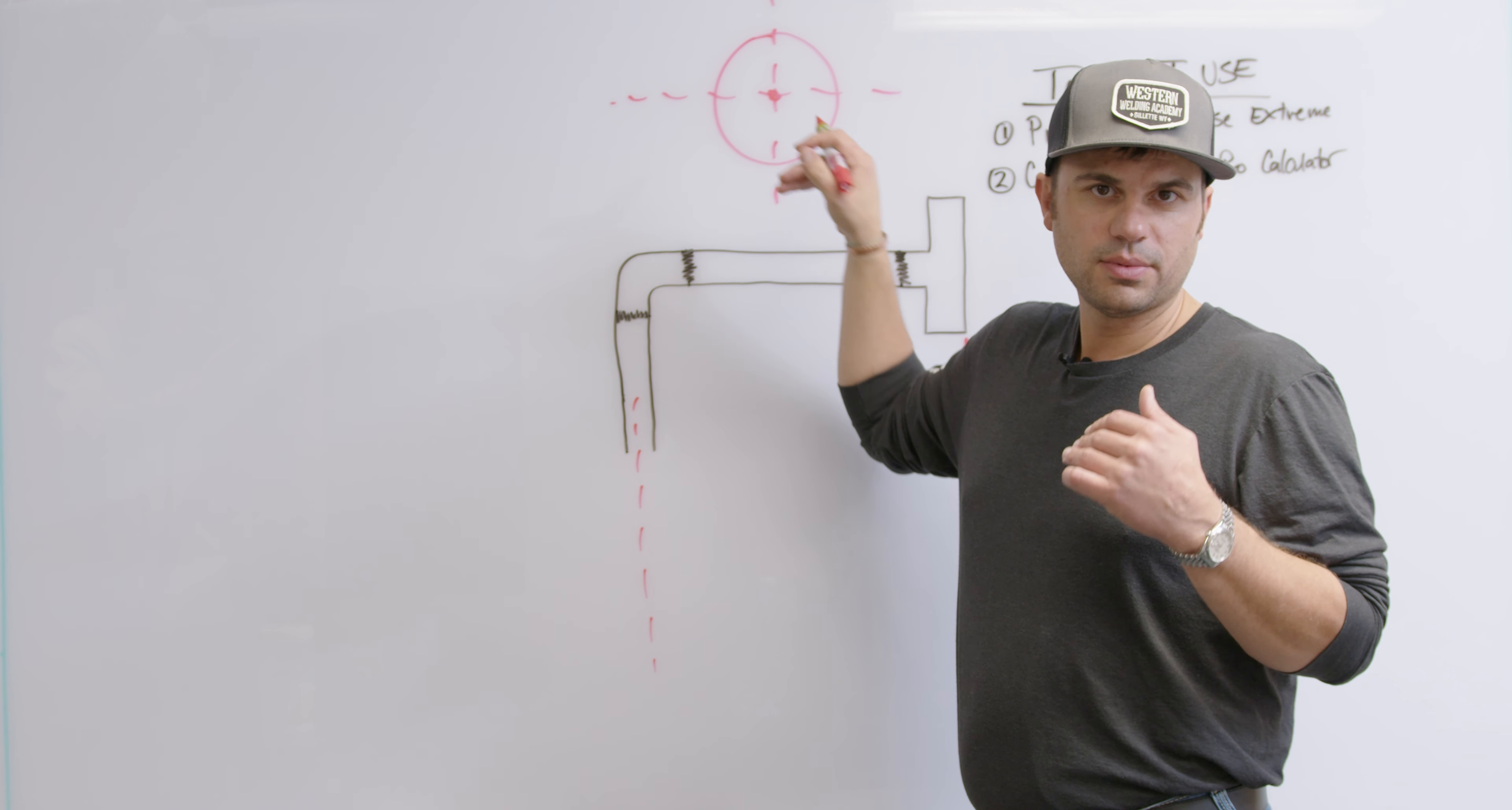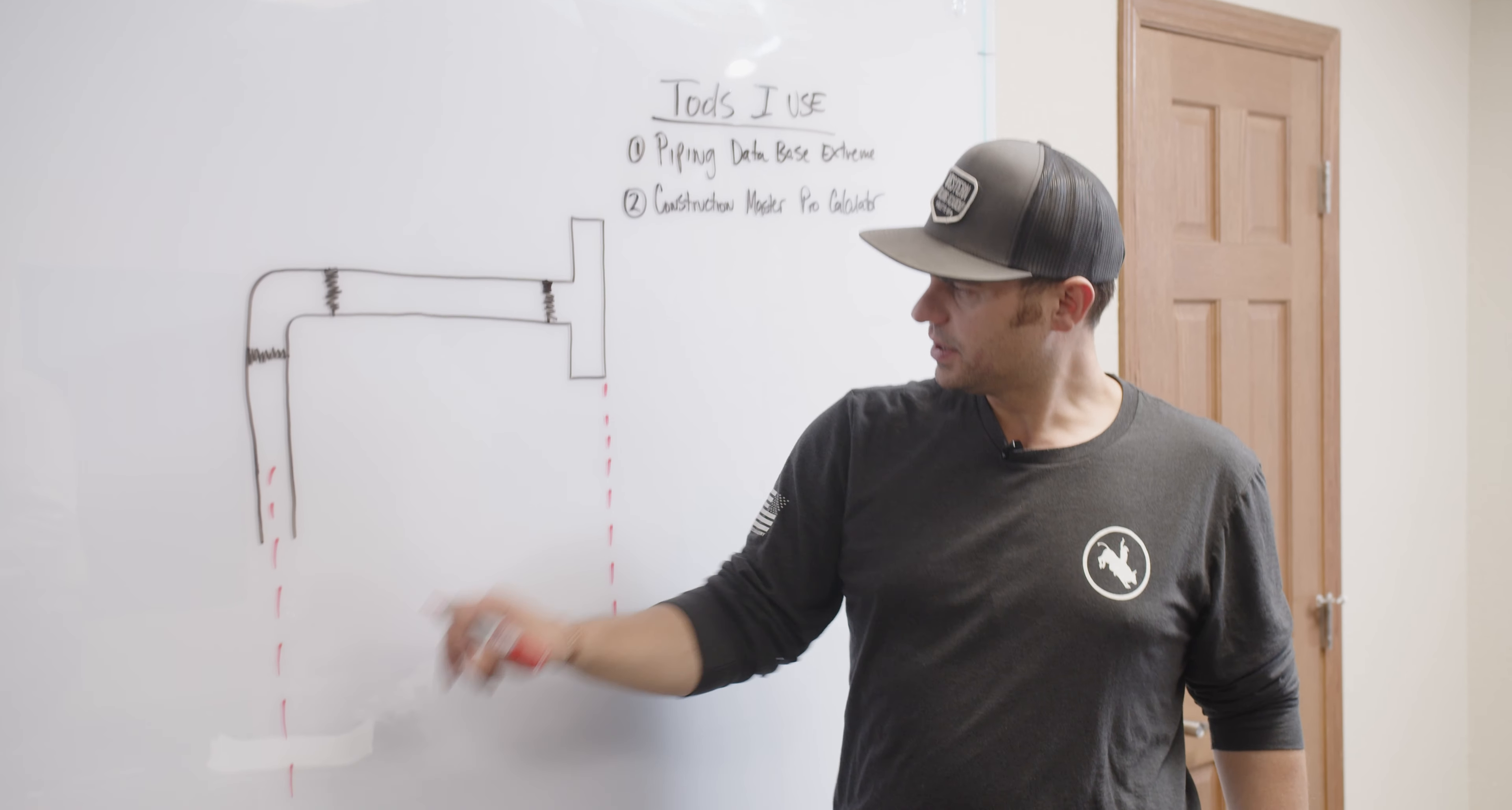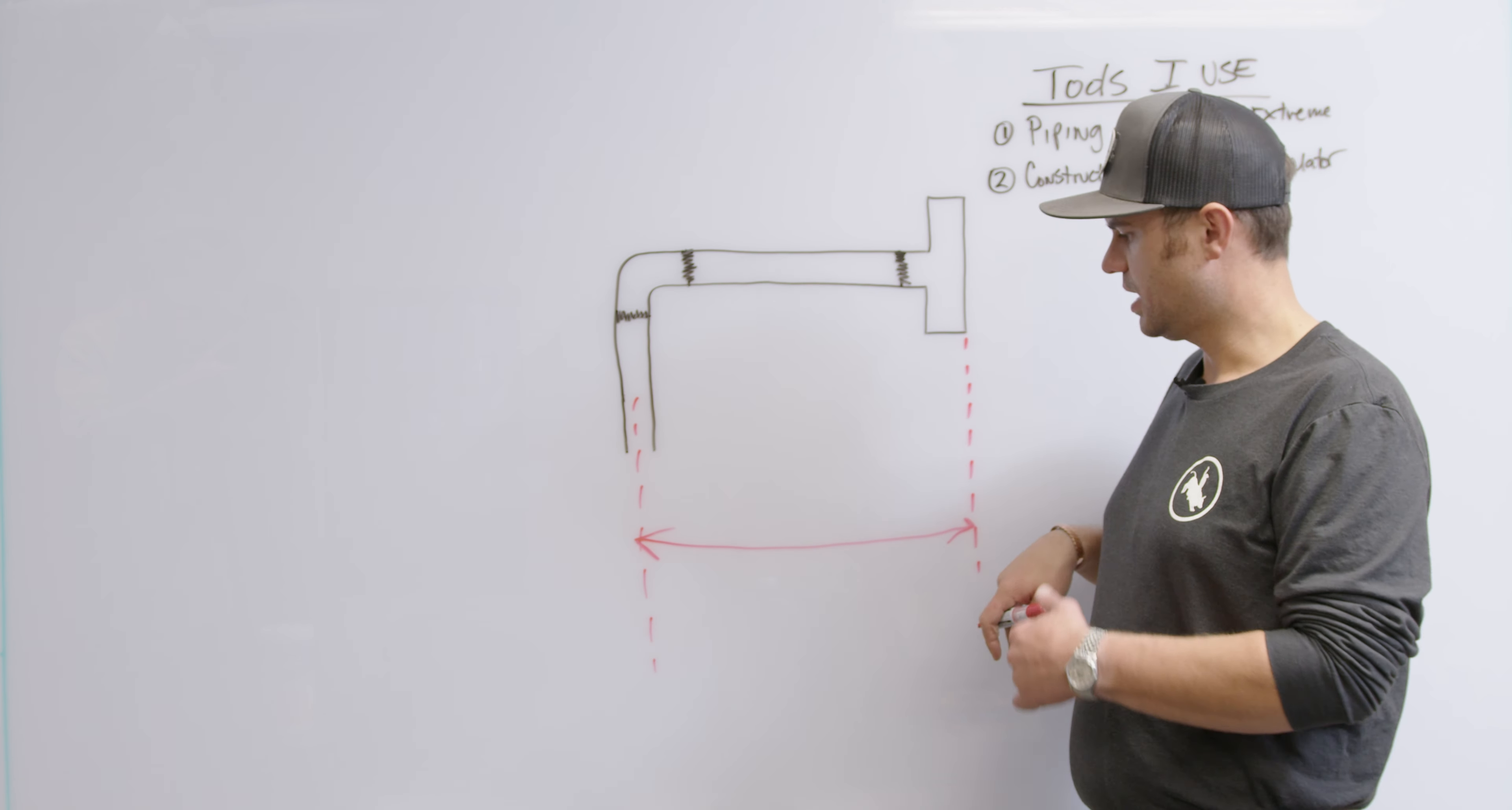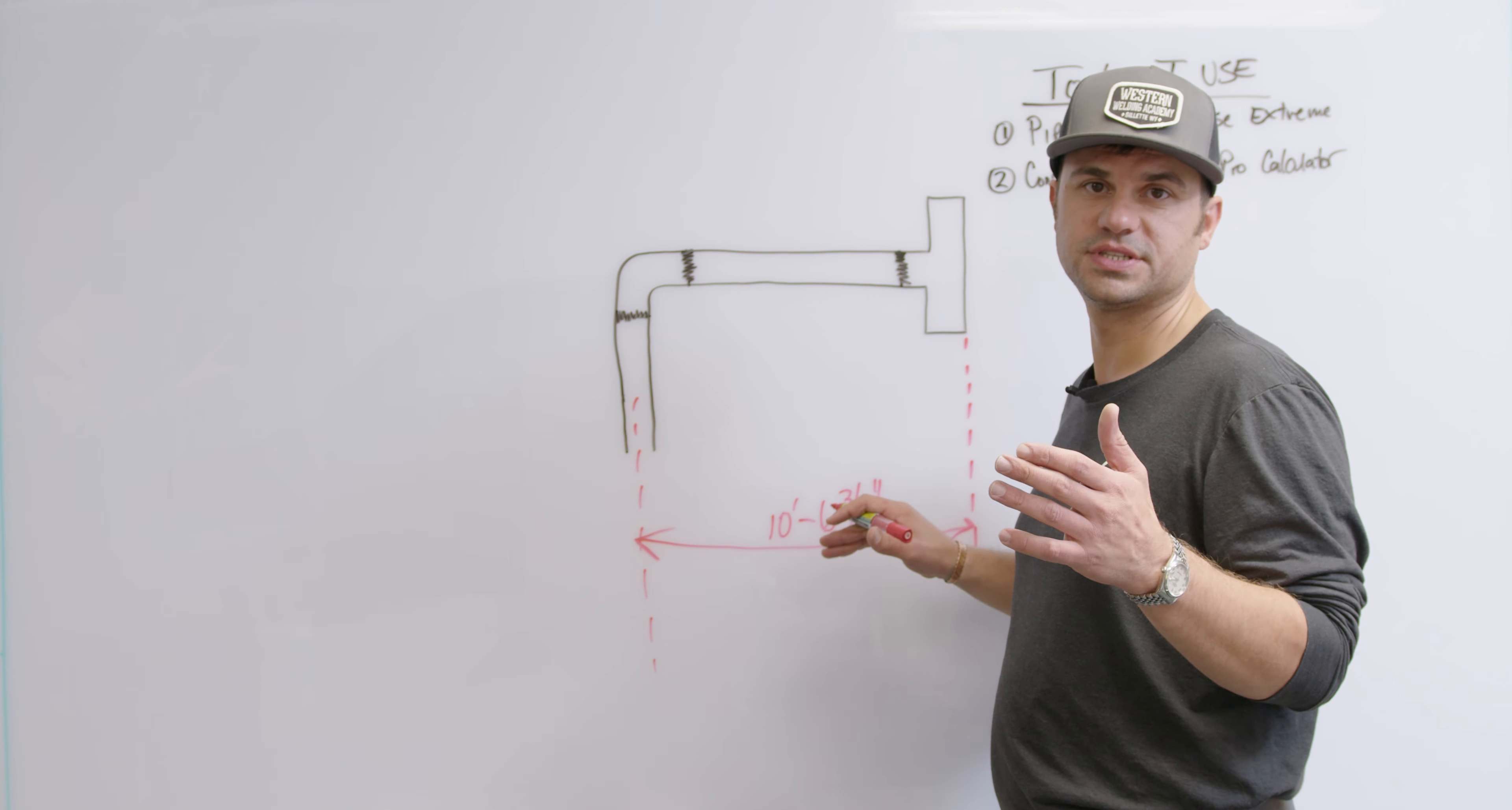The big thing to note here is the engineer is going to spec this thing out, measure it from the face of this flange to the center of this pipe right here. Why do we always do the center of the pipe? When I say center I mean the center of the pipe. You don't have to worry about east, west, north, south. All piping always is measured from the very dead center of the pipe.